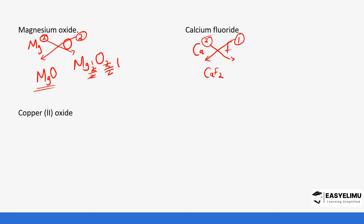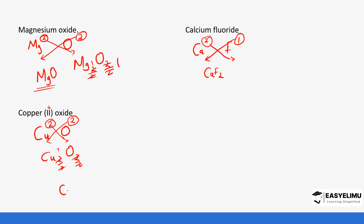Copper(II) oxide: this example comes from the transitional elements and the two represents the valency, oxidation number, or charge of copper. The symbol for copper is Cu. From the bracket you can tell the valency is two, and oxygen's valency is always two. Crisscross the charges - you get copper with a two and oxygen with a two. Cancel out by dividing by two on both sides. Finally we get CuO - copper oxide.